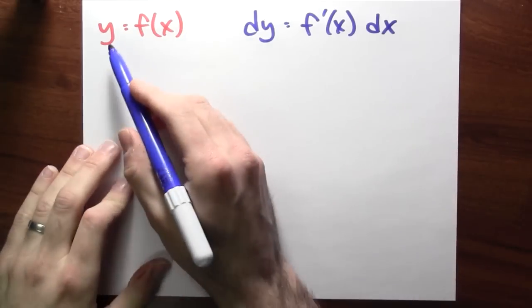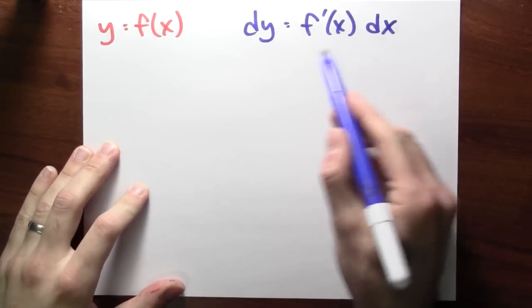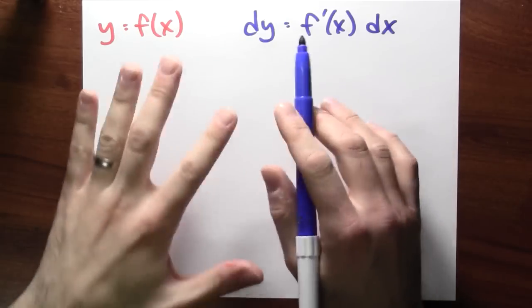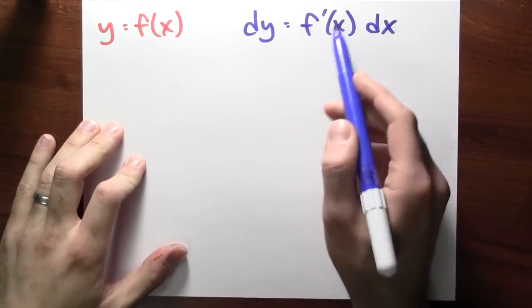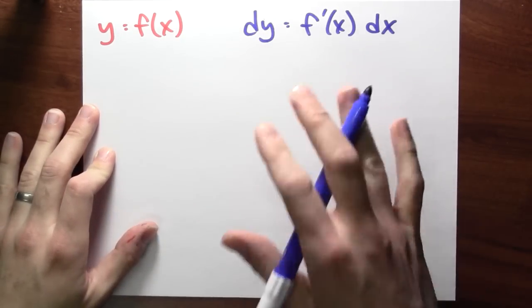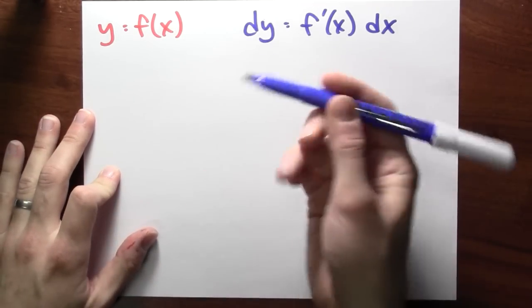But honestly, I wouldn't worry too much about how to actually think about these things. I'd focus more on how to compute with these objects. The basic trick is that if y is f of x, then dy is the derivative of f times dx. And you don't even necessarily need to differentiate f in a lot of cases. The differential satisfies many of the same rules or analogous rules as just differentiation satisfies.